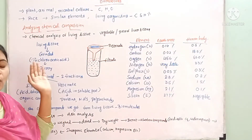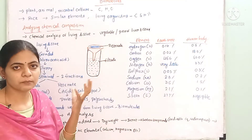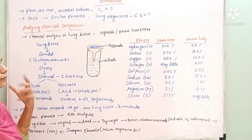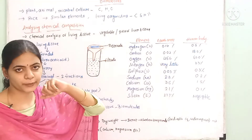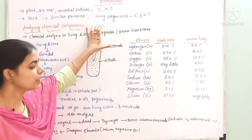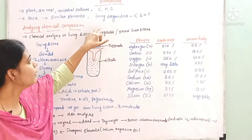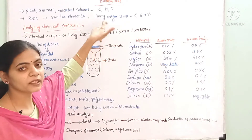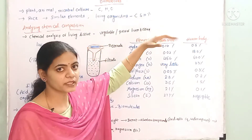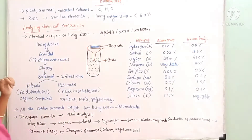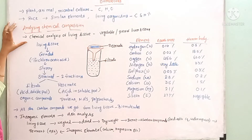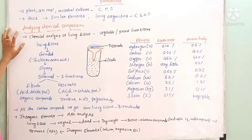Non-living matter like rock and earth crust — we have the same type of elements. But if we look at the non-living matter, we have the same type of chemical composition.